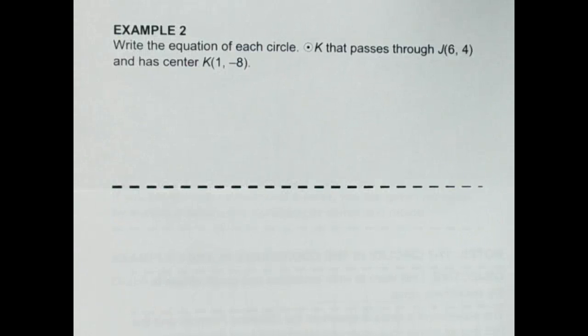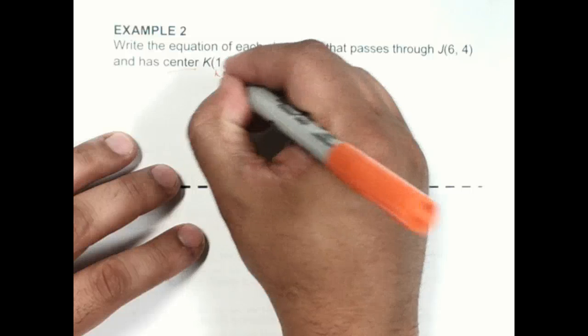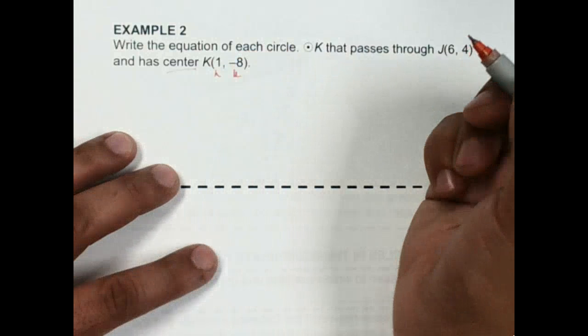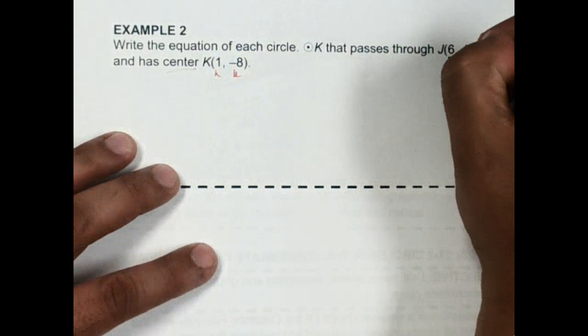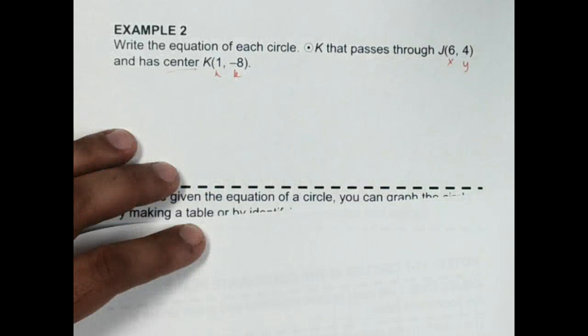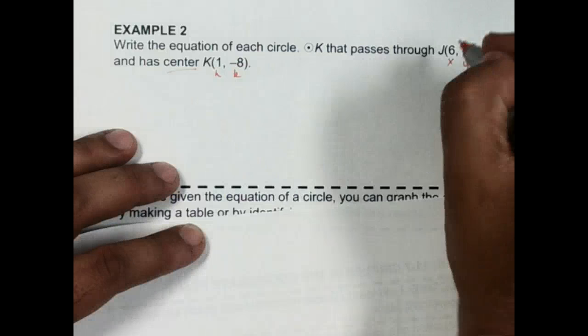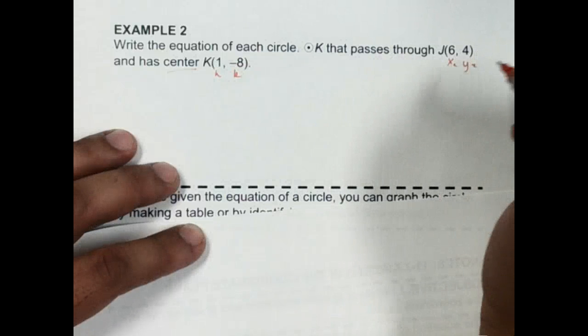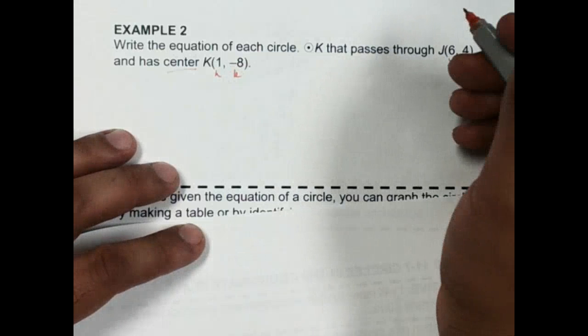All right, now with Example 2, they give us actual two coordinates. It passes through J at (6, 4) and has a center K at (1, -8). Since this is the center, this is going to be my h, and this is my k. This would be my x and y. We'd go ahead and call that our x₂, y₂ values, and then we're just going to put that into the formula.